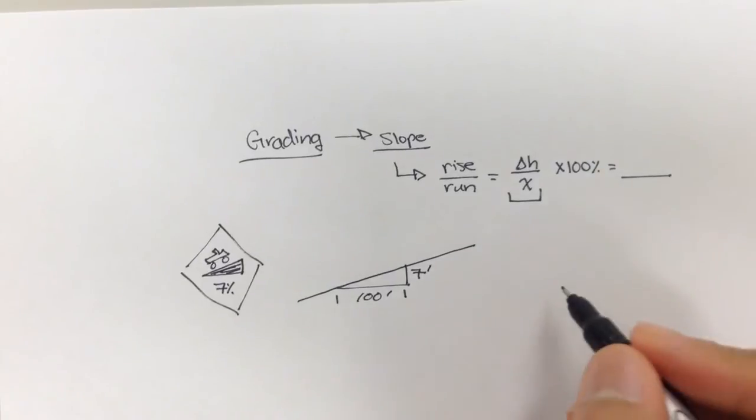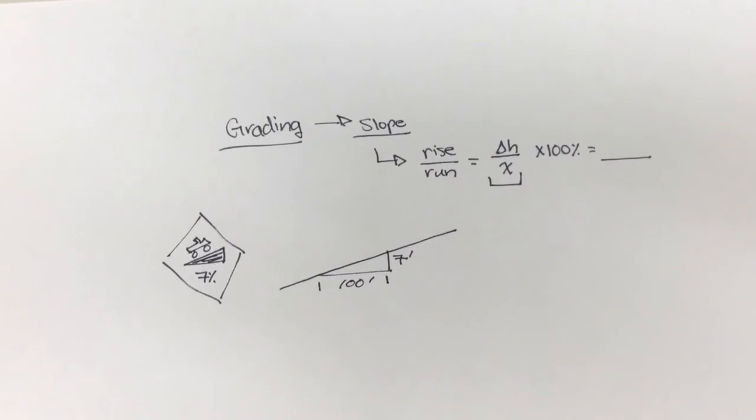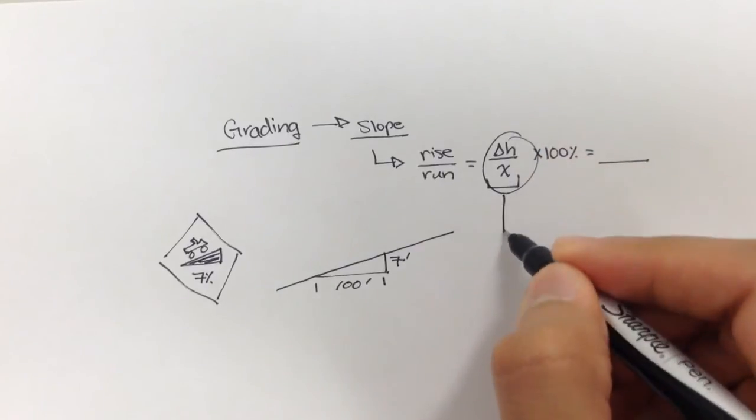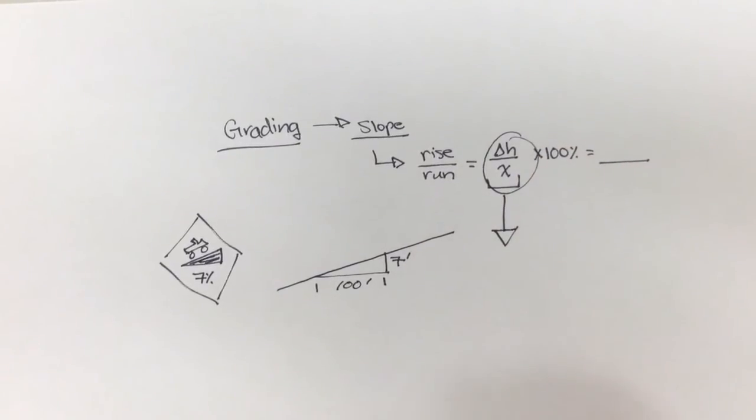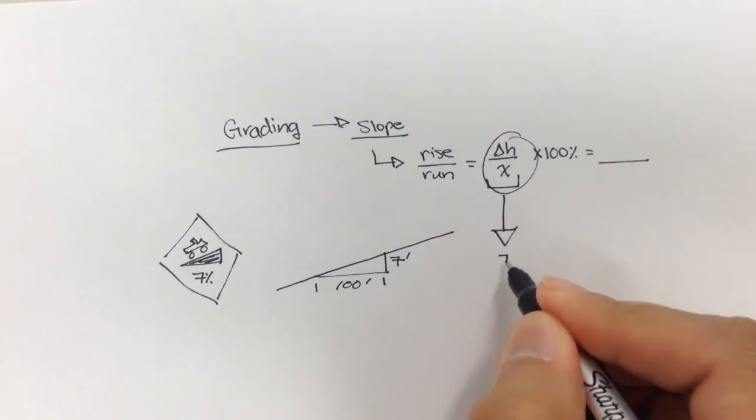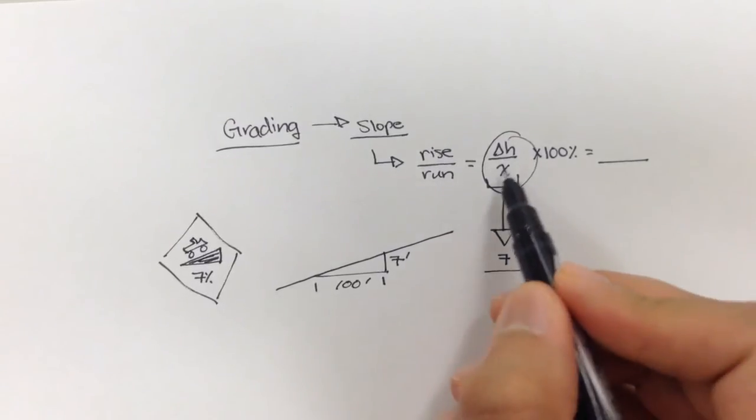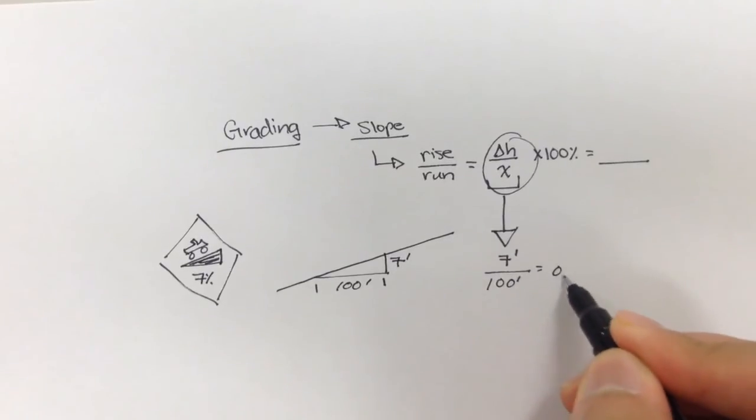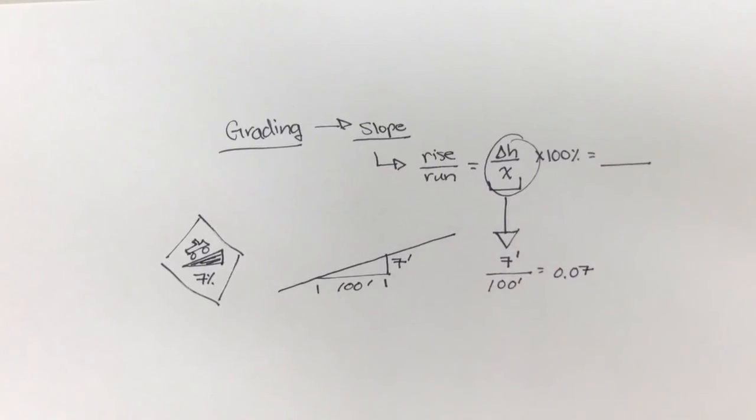All right. And usually, again, we express this as a percent, because if we took this definition up here, and we said, okay, well, the change in height or the rise is 7 feet, and we divide that by some distance x, which is 100 feet, we're going to get 0.07. We don't like that.